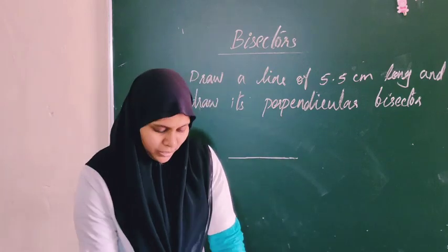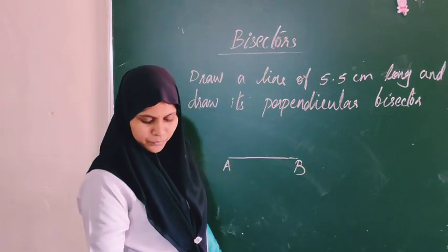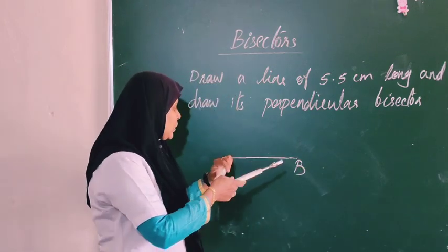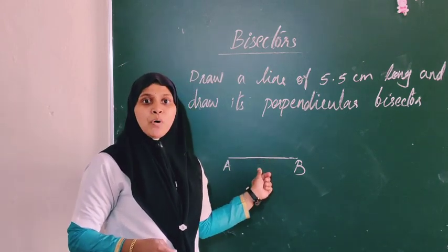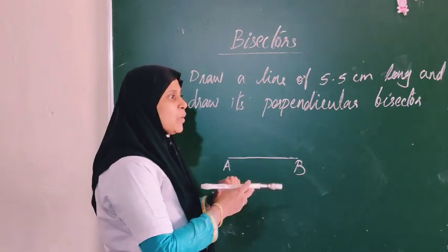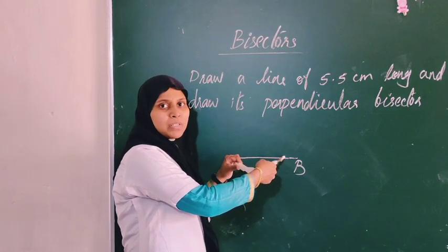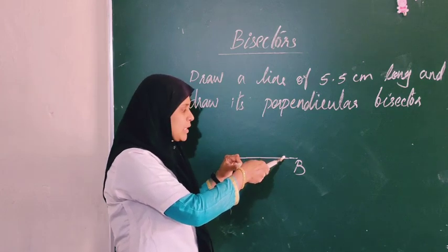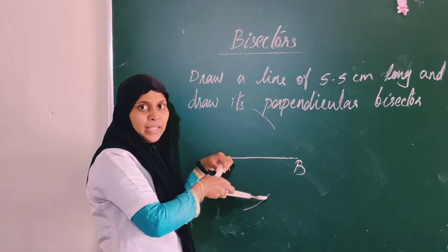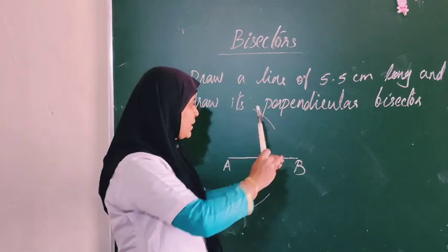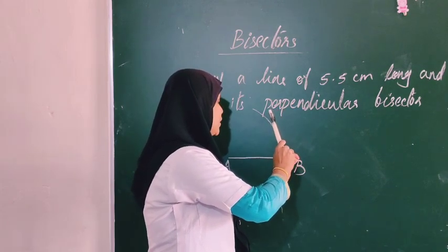Then using the compass, take more than half of the line's length as the compass measurement. Place the compass at each endpoint and draw arcs above and below the line. Use the same compass measurement from both ends so the arcs cross each other.